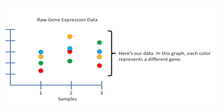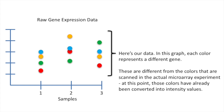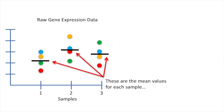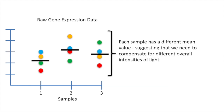Here's our data. In this graph, each color represents a different gene. These are different from the colors that are scanned in the actual microarray experiment — at this point, those colors have already been converted into intensity values, and that's what we're looking at here. Each gene has its own color, and the value on the y-axis represents the intensity that that gene had on the microarray. These are the mean values for each sample. Each sample has a different mean value, suggesting that we need to compensate for different overall intensities of light.